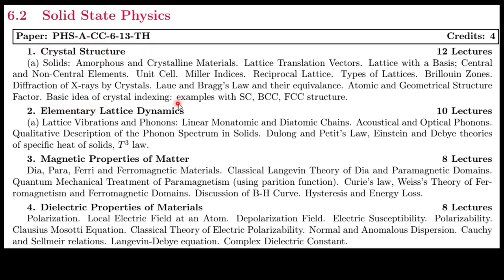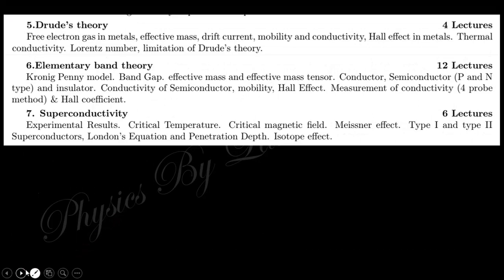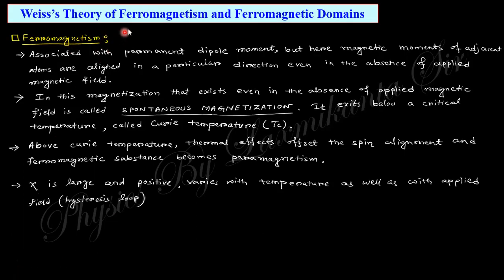Crystal structure and elementary lattice dynamics were already discussed in previous lectures. In the last lecture we discussed dia, para, ferromagnetic and classical Langevin's theorem, quantum mechanical treatment, and Curie — up to that we discussed in the last video. Today we want to discuss Weiss theory, the BH curve, hysteresis, and energy loss. In the upcoming session we will be continuing this portion as well.